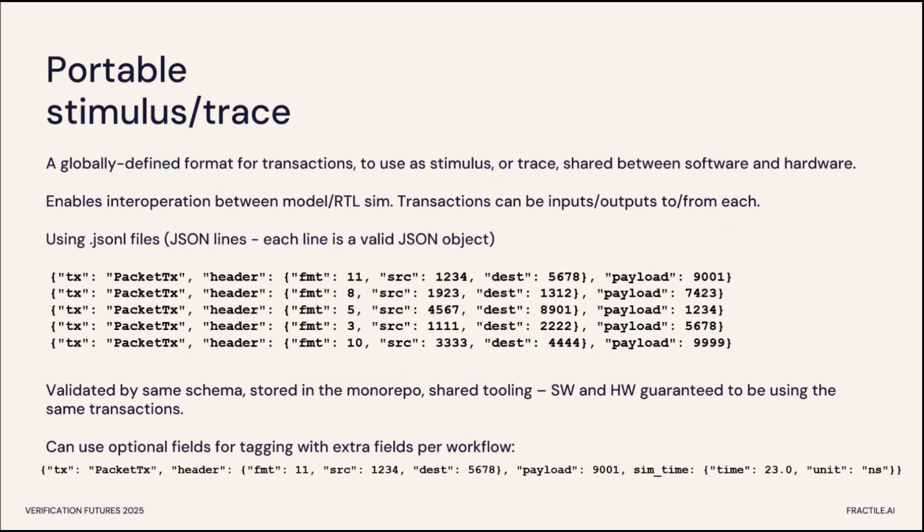The second big benefit is we've achieved a kind of portable stimulus framework. We have an agreed-upon JSONL file description of what transactions look like. These transactions can then be used as inputs to or outputs from either hardware simulations or model runs, giving software and hardware a shared language to speak to each other. The beauty of the monorepo is that you can validate this JSON through a schema stored all in one place, so everyone's singing from the same hymn sheet. You can also have optional fields per transaction, such as simulation time, which comes from simulations but doesn't mean anything to the model.